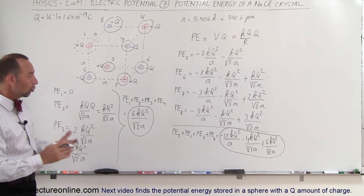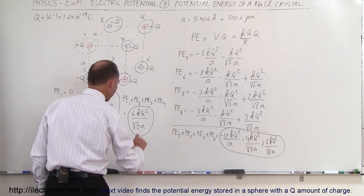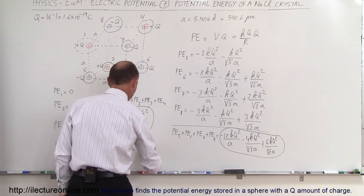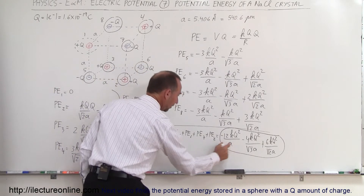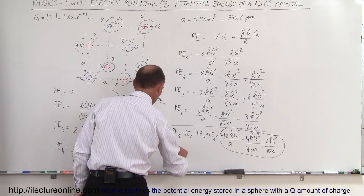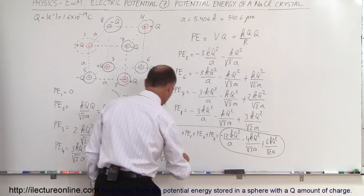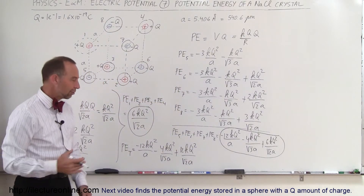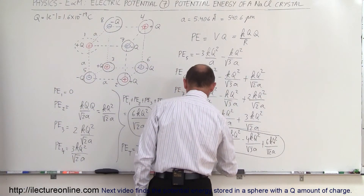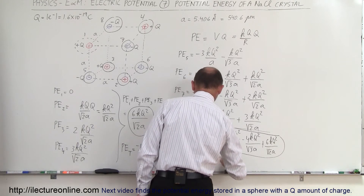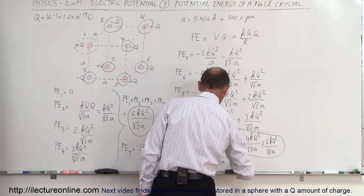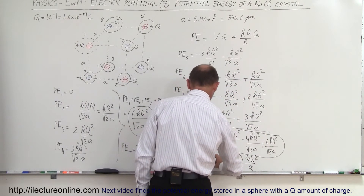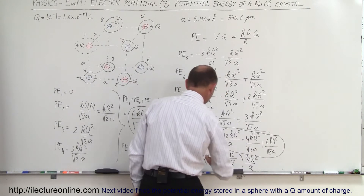That's the energy required to bring the four negative charges together. So the total energy P_total is the sum of both groups. We have plus 6 from the positive charges and plus 6 from the negative charges giving plus 12, so altogether we get: minus 12 KQ squared over A, minus 4 KQ squared over the square root of 3 times A, and plus 12 KQ squared over the square root of 2 times A. We can factor out KQ squared over A, leaving: minus 12 minus 4 over the square root of 3 plus 12 over the square root of 2, all multiplied by KQ squared over A.